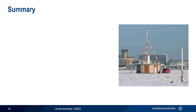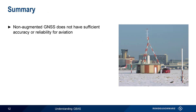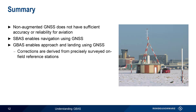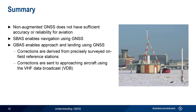Let's summarize what we've covered. Regular or non-augmented GNSS does not provide sufficient accuracy or reliability for aviation applications. The use of SBAS, the space-based augmentation system, enables the use of GNSS for navigation, but GBAS, the ground-based augmentation system, is required for GNSS-supported approach and landing. In GBAS, differential position corrections are derived by comparing precisely surveyed on-field locations with positions derived from GNSS satellite signals. After the correction data has been calculated and formatted, it's sent to approaching aircraft in the form of a VHF data broadcast.